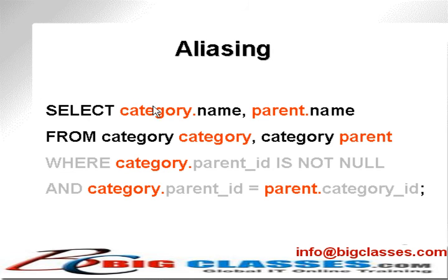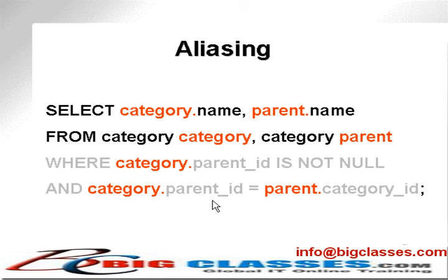So you'd select alias category from the first table in the from clause — .name — and parent.name, which is the second instance of category in the from clause, joining the table to itself. The actual join clause in Oracle's original SQL format is in the where clause, where you take the category parent ID and join it to the category ID — parent to child ID. The additional where clause condition ensures we do not get blank parent values — we only get child categories, because the parents don't have a parent, so they're null.